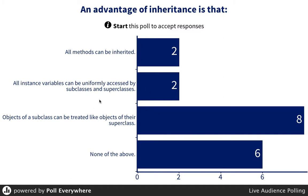Objects of a subclass can be treated like objects of their superclass — yes, because if I create a villain, he still has all the properties of the hero. So if I'm testing to see if he has the same properties, that's correct. None of the above is obviously not correct, because C is correct. So the answer is C.